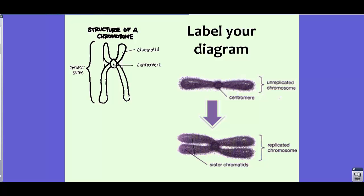Think of the centromere as sticky tack or some sort of glue. Each strand that we see is called a chromatid. Because in this X shape we actually see two chromatids, we call these sister chromatids. They are basically replicated chromosomes that look exactly the same, and eventually in mitosis they get split apart. They hold the same genes, but they're replicated — so they're called sister chromatids. Make sure you stop and label your diagram.